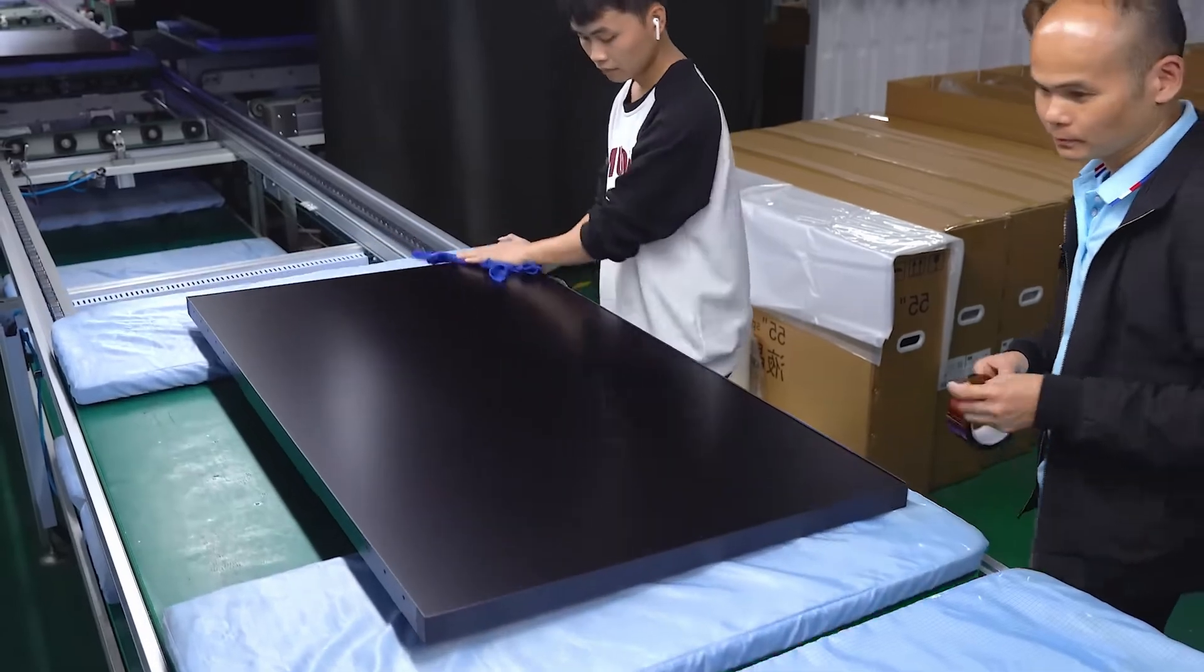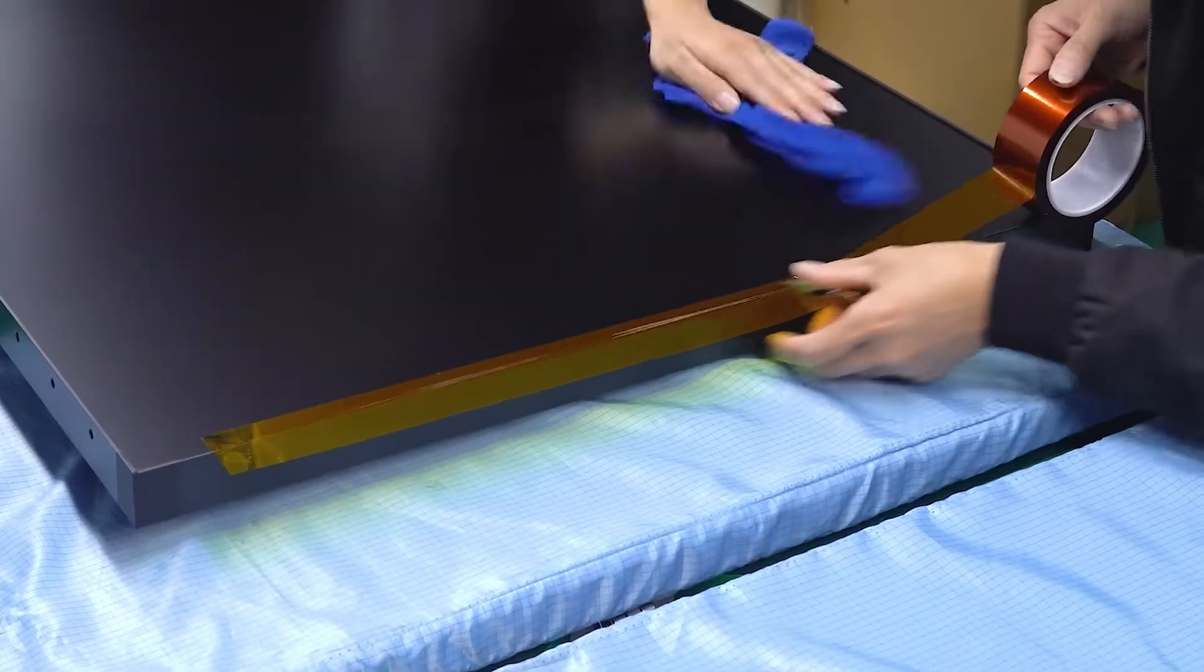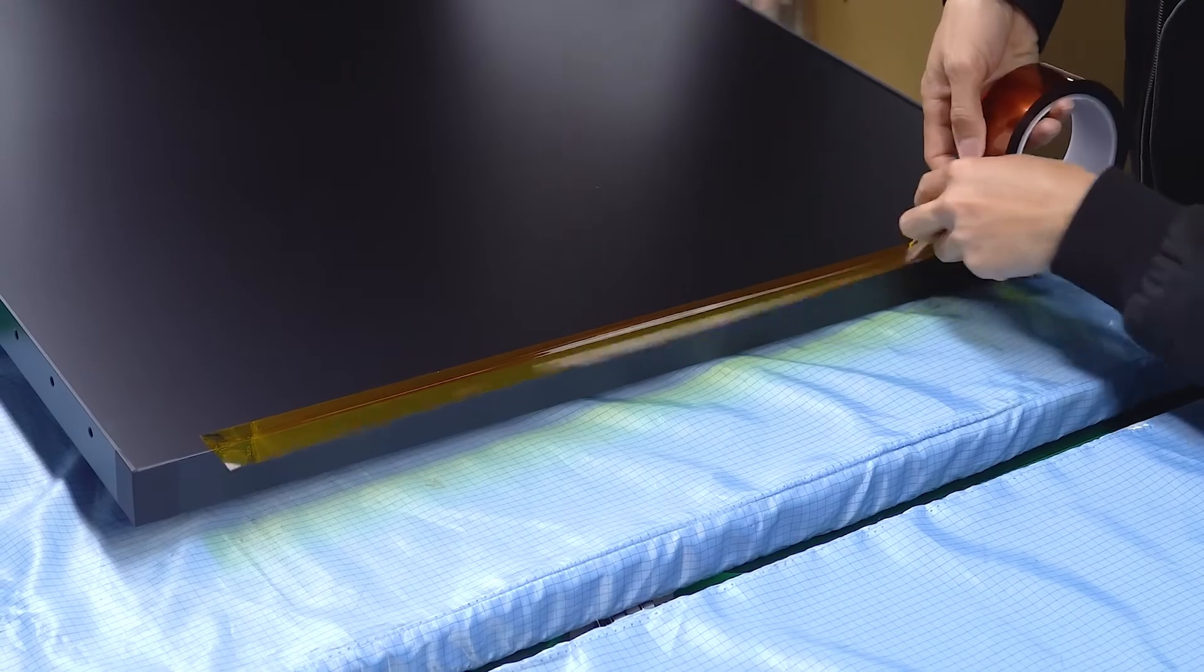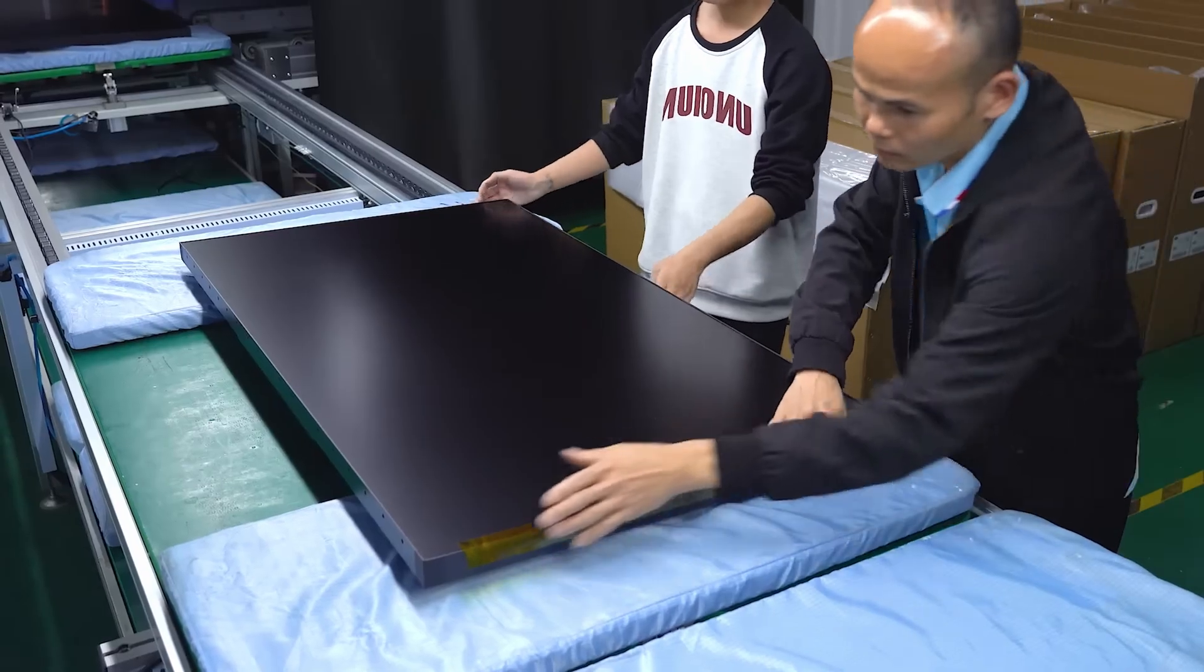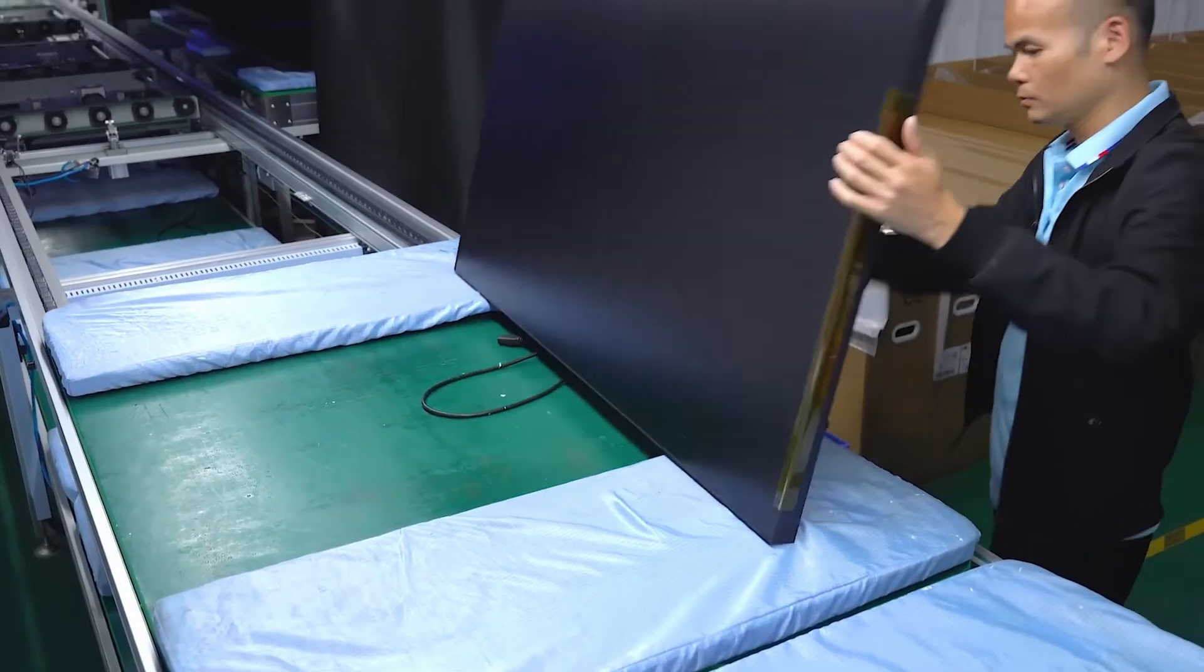The TV has one final visual inspection before tape is added to the sides, clear plastic is added to protect the display from getting scratched, and the TV is added to its box for shipping.